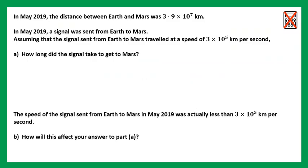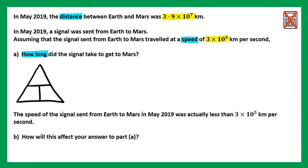On to the advanced question, which is one of the trickiest types of questions you can find to do with calculating standard form. In May 2019, the distance between Earth and Mars was three point nine times ten to the power of seven kilometres. A signal was sent from Earth to Mars, travelling at a speed of three times ten to the power of five kilometres per second. How long did it take to get to Mars? This question is about distance, speed and time, so we'll need to use our relationship between speed, distance and time.